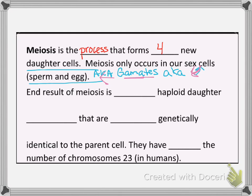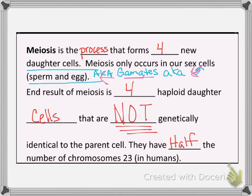The end result of meiosis is four haploid daughter cells that are NOT genetically identical to the parent cells — underline, bold, highlight that. This is how we're different. You're not identical to your parent; you have some of each of their genes in you because of variation. Those four new cells each have just 23 chromosomes. Once those cells join together at fertilization, it gives you your 46.